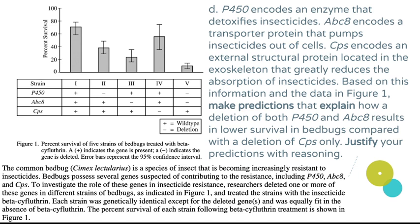Part D is a longer prompt: P450 encodes an enzyme that detoxifies insecticides; ABC8 encodes a transporter protein that pumps insecticides out of cells; CPS encodes an external structural protein in the exoskeleton that greatly reduces absorption of insecticides. Based on this information and the data in Figure 1, make predictions explaining how deletion of both P450 and ABC8 results in lower survival compared with deletion of CPS only, and justify your predictions with reasoning.